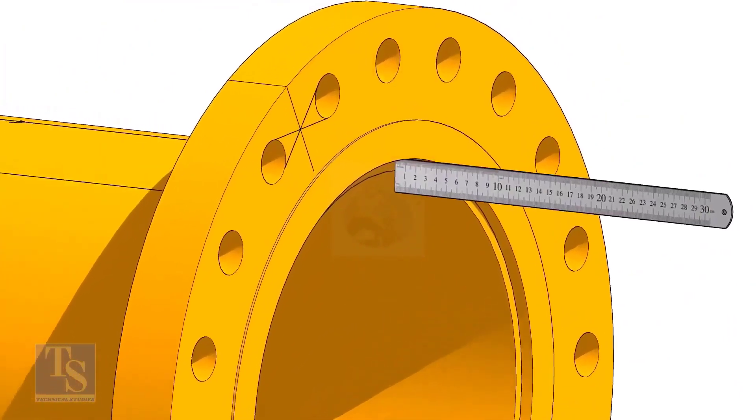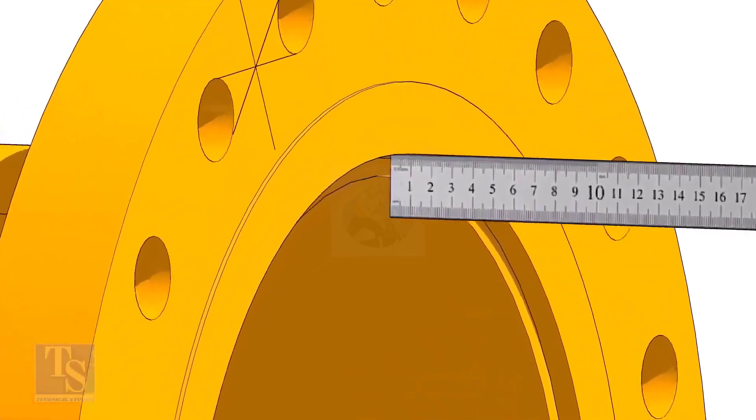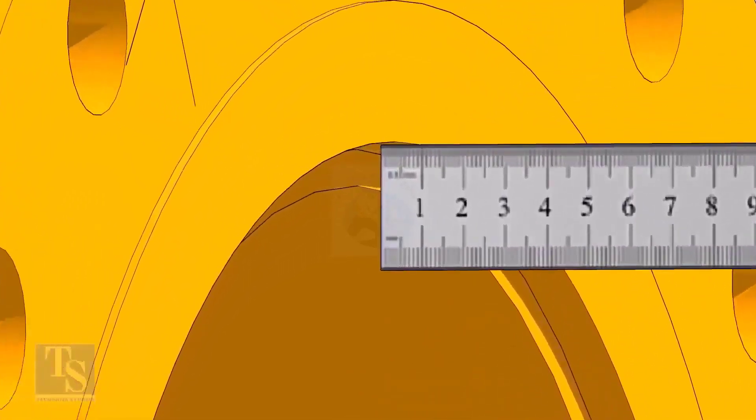Fix the distance between the flange face and the pipe face. Usually, this measurement is equal to the thickness of the pipe.